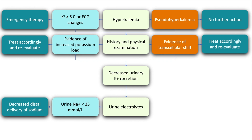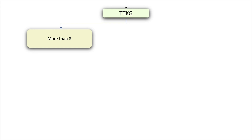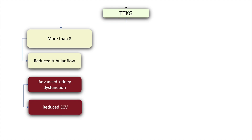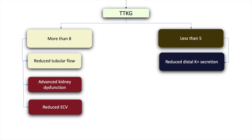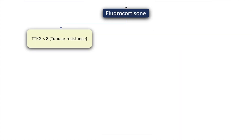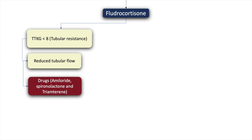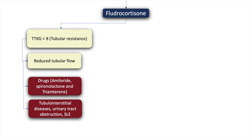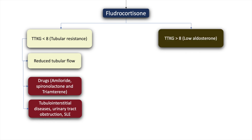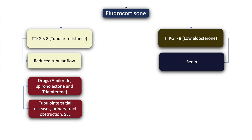If urine sodium is not low, we must calculate the transtubular potassium gradient (TTKG). If the TTKG is more than 8, this indicates reduced tubular flow as may be seen in advanced kidney disease or reduced extracellular volume. If it is less than 5, this is due to reduced distal potassium secretion, and in such cases the patient will benefit with a trial of fludrocortisone. If after fludrocortisone the TTKG remains low, this indicates tubular resistance, possibly due to drugs such as amiloride, spironolactone, and triamterene, tubulointerstitial disease, urinary tract obstruction, or systemic lupus erythematosus.